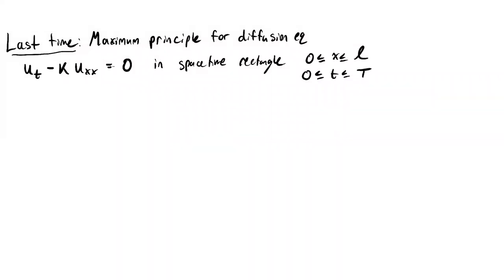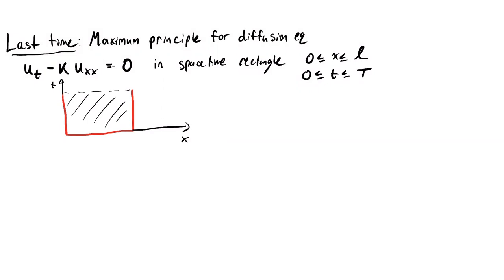If you draw this, let me draw the left, right, and lower boundaries in red and then put the top separately. So this is the t-axis and this is the x-axis. This is the region R. The maximum principle says that the maximum value of your solution is attained on one of the red lines. If you think about this in terms of the heat equation, this is saying the hottest point is always on the boundary.